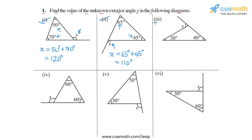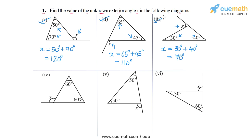Then we come to part three, in which x is this exterior angle and the opposite interior angles are 30 degrees and 40 degrees. So x will be equal to 30 degrees plus 40 degrees, or x will be equal to 70 degrees. So this is the answer for part three.